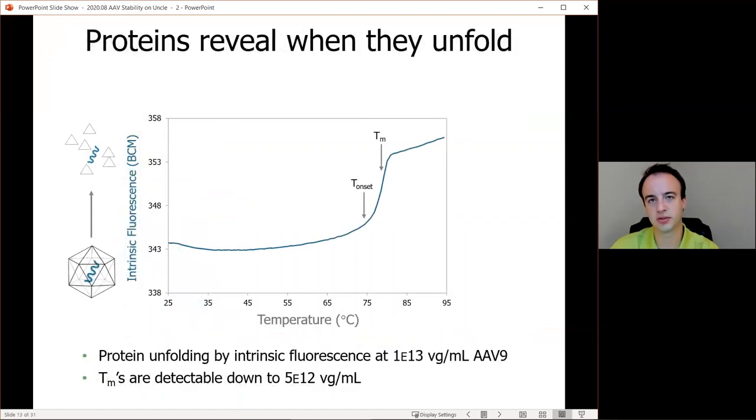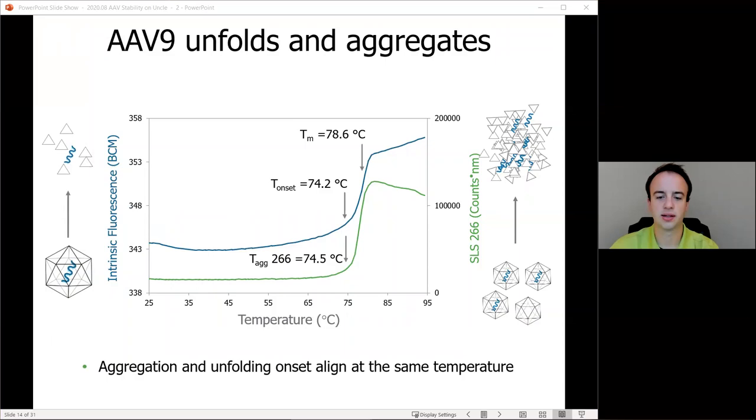But if we analyze that intrinsic fluorescence peak for the spectral center of mass, also known as the barycentric mean or BCM wavelength, we'll see that that spectral center of mass also shifts upward to higher numerical values of wavelengths in that redshift moment. So in this case, we can identify that by looking at the inflection points in that BCM curve. So we see a BCM inflection point at 78 degrees Celsius. So that's why we labeled our Tm, or our melting temperature, for this experiment. The T onset is when that slope starts to increase. So that's when the proteins of the capsid are unfolding. If we overlay that data with SLS data in green from the 266 laser, we can see that aggregation behavior and unfolding onset line up at the same temperature, about 74 and a half degrees Celsius.